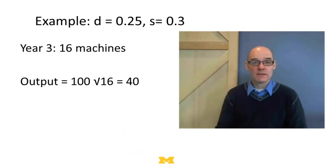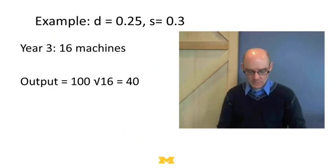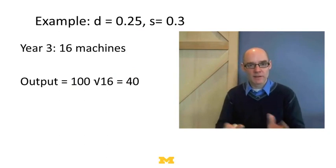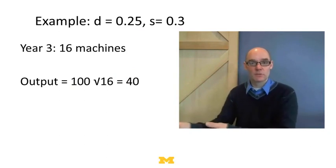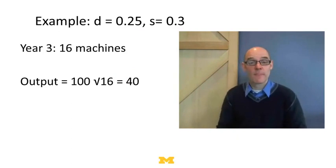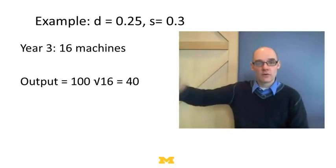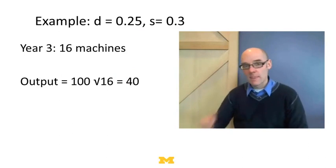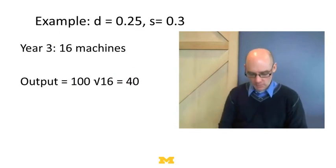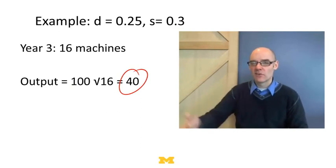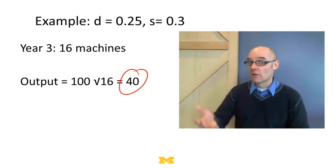Year three: with our little fudge factor, we've got 16 machines. Output is 10 × √16 = 40. So our growth went 20, then 30, then 40 — actually a little less, because we should have subtracted two and a quarter. But we get this nice sustained growth. Now we can ask: is this just going to continue — 20, 30, 40, 50, 60? Or is it going to fall off? We see a hint it's falling off, and we can start asking: are there limits to this growth?